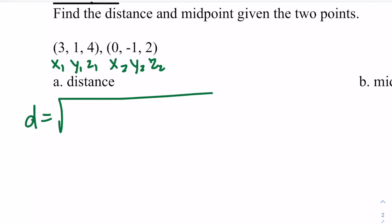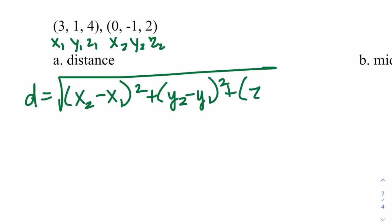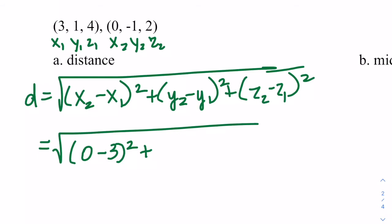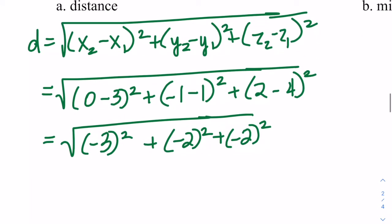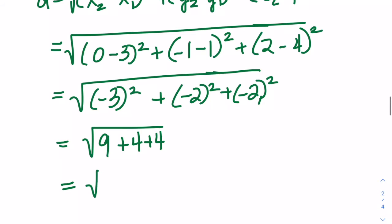The distance is the square root of (x2 minus x1) squared, plus (y2 minus y1) squared, plus (z2 minus z1) squared. So this will equal the square root of (0 minus 3) squared, plus (negative 1 minus 1) squared, plus (2 minus 4) squared. Let's simplify: negative 3 squared, plus negative 2 squared, plus negative 2 squared. So that'll be 9 plus 4 plus 4. That's the square root of 17.